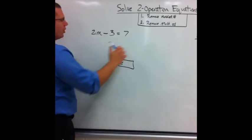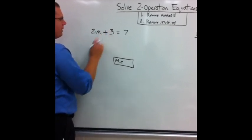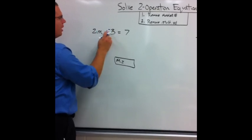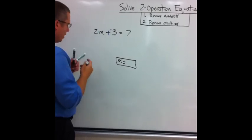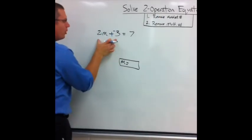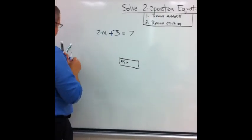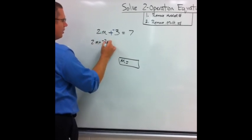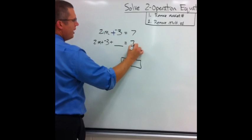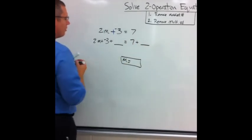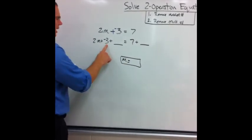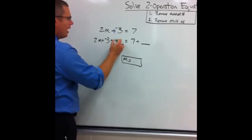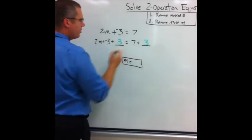We know to take subtraction, turn it always to addition. This becomes addition. What happens to the item after it? It becomes its opposite. So this is plus negative 3. As usual, I'm going to remove the added number. I'm going to expand this side. 2 times m plus negative 3 plus add a number. 7 plus add a number. I need to get rid of the added number. How do I do it? I add the opposite. So the opposite of negative 3 is 3. This is 3.